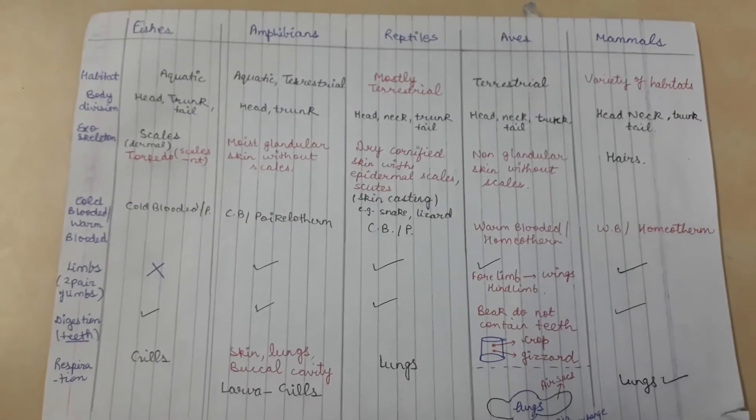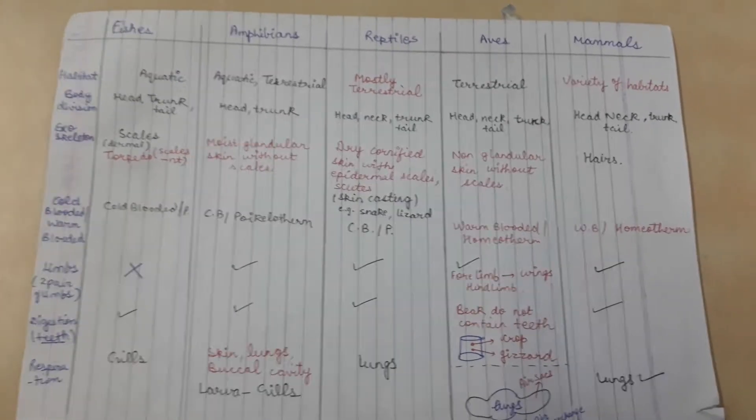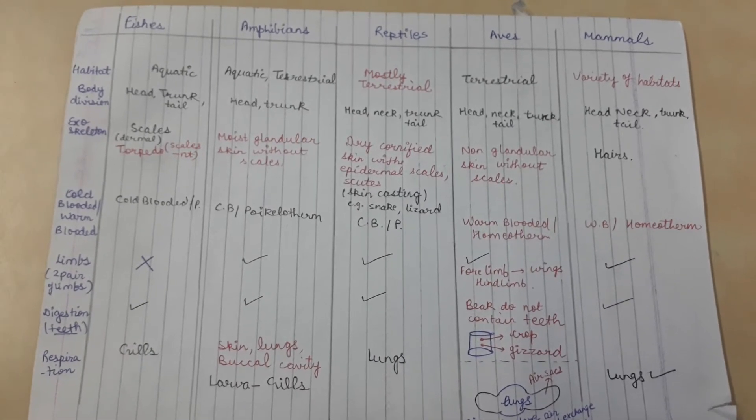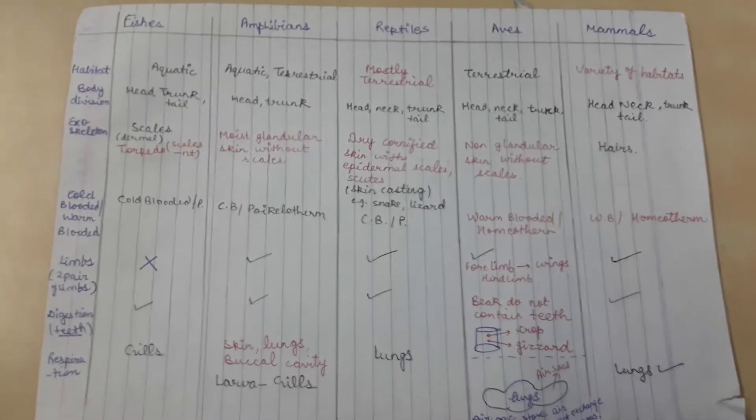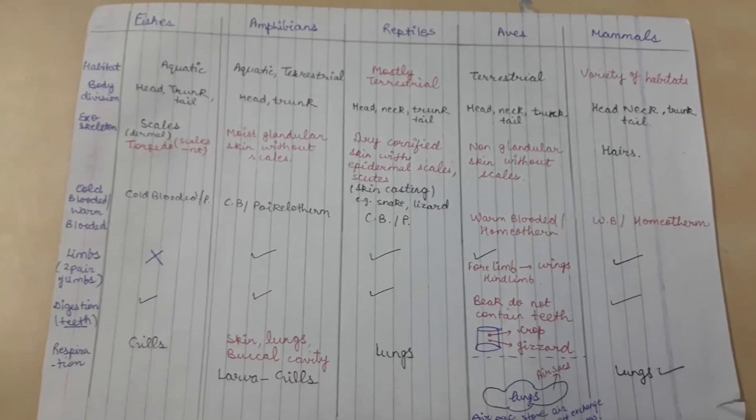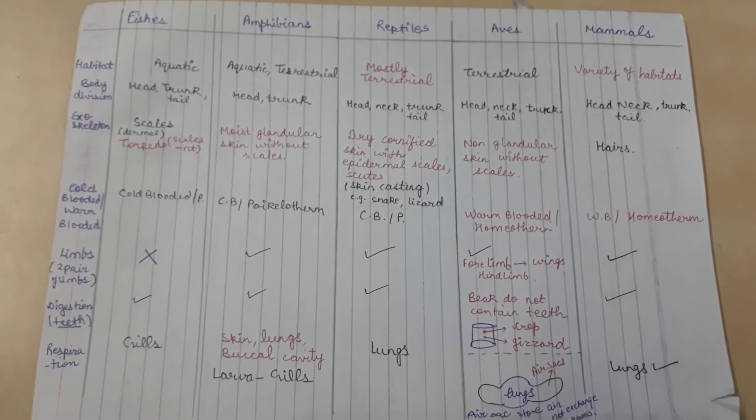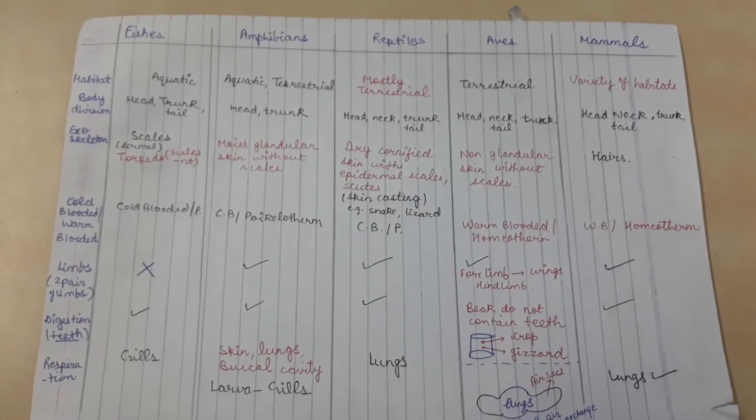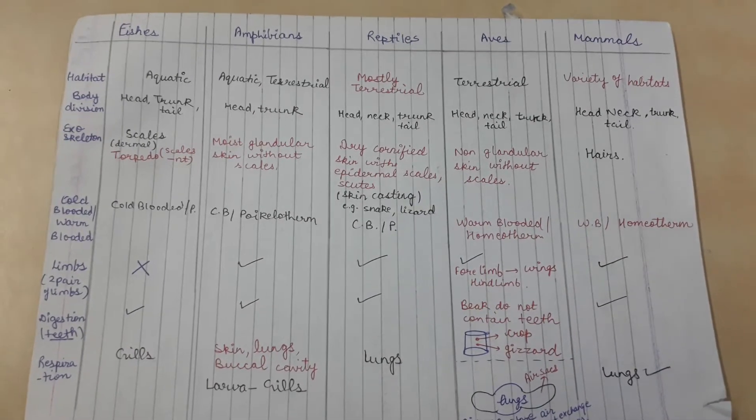Hi guys, welcome to the Young Mind YouTube channel. Today we will study the animal kingdom, specifically the phylum Chordata and subphylum Vertebrata. Vertebrata includes fishes, amphibians, reptiles, aves, and mammals.